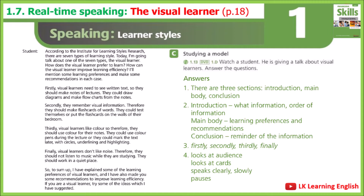Firstly, visual learners need to see written text, so they should make notes of lectures. They could draw diagrams and make flowcharts from the notes. Secondly, they remember visual information; therefore they should make flashcards of words. They could test themselves or put the flashcards on the walls of their bedroom.